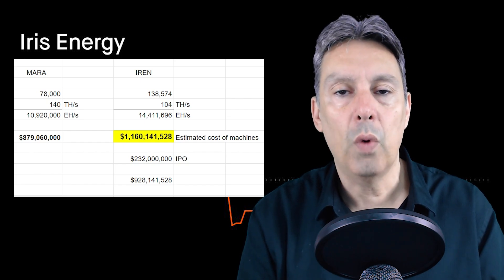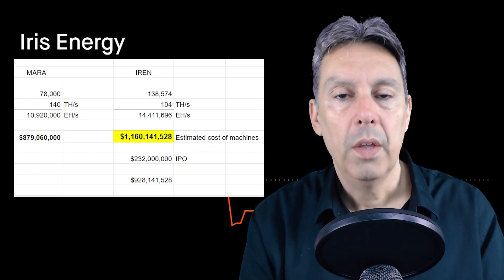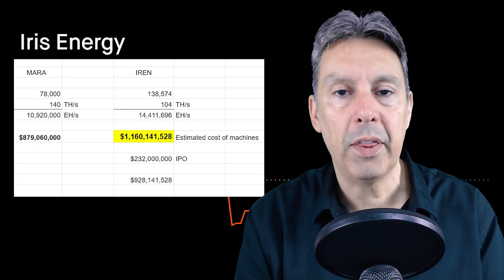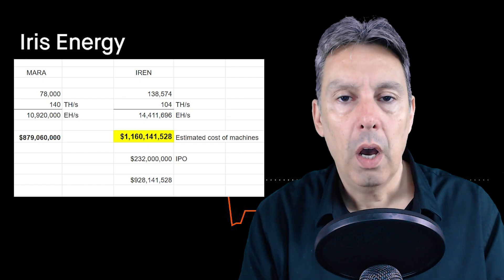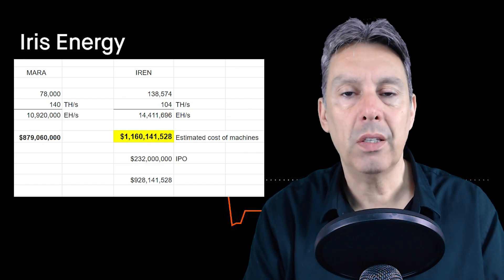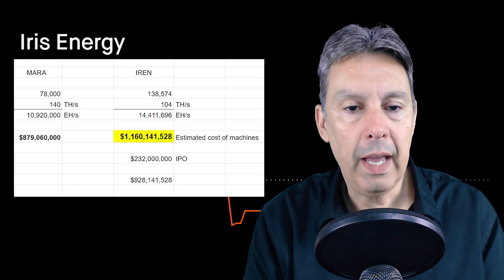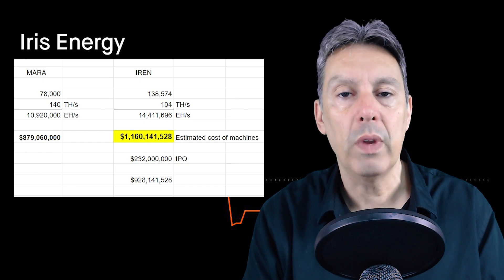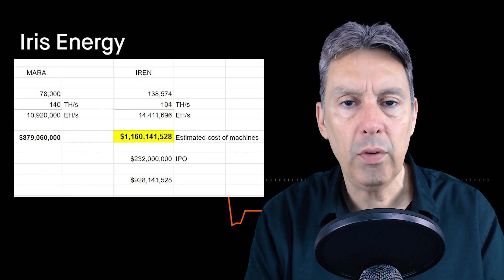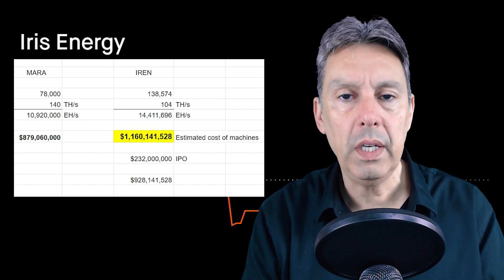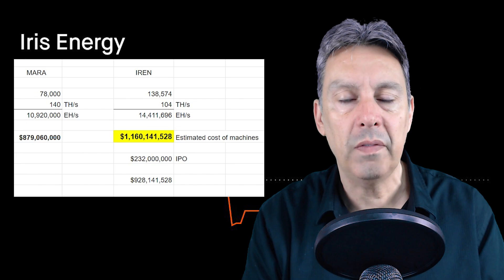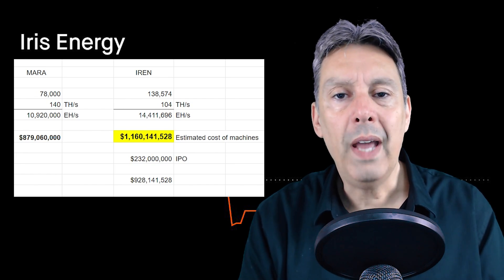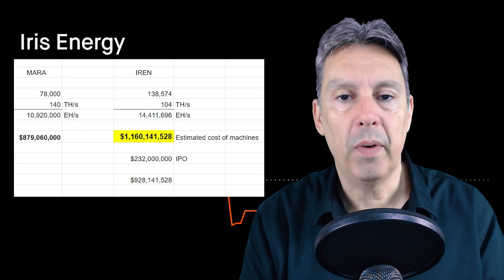The second key critical path thing is these machines need to be delivered on time. 154,000 machines, that's an awful lot of machines. 138,000 remaining to be delivered. They have to get delivery, they have to have their facilities up and running, and then they have to install these machines and get them active in a timely manner.